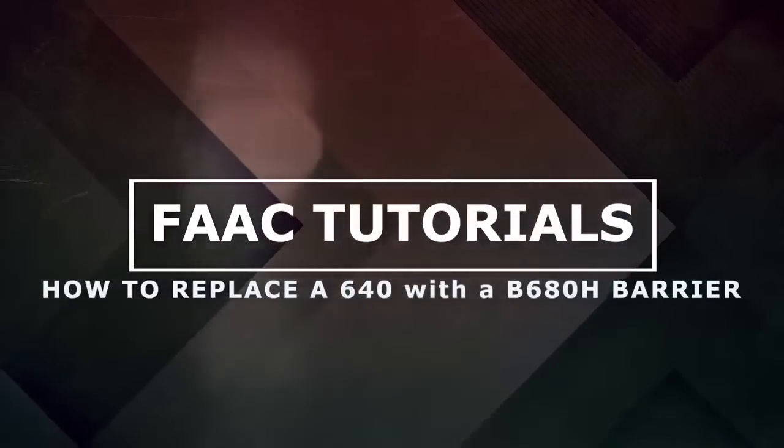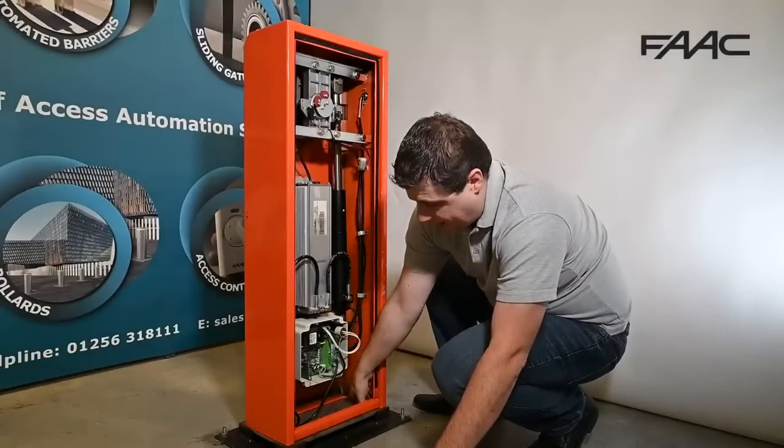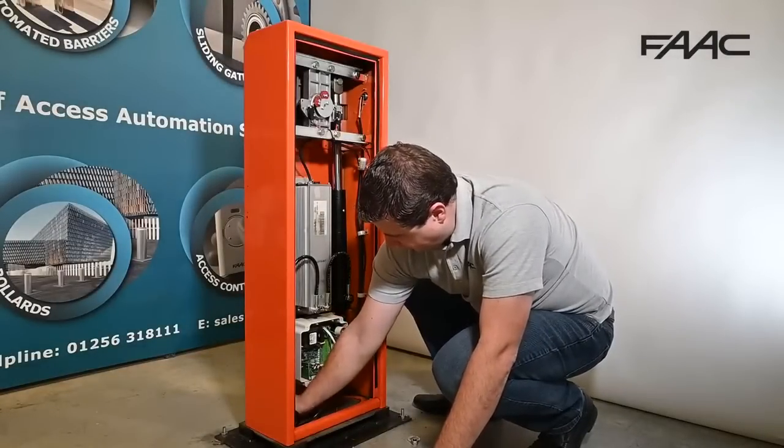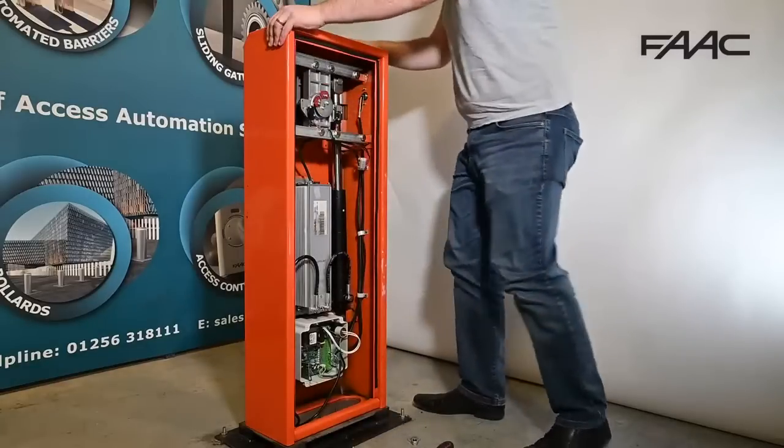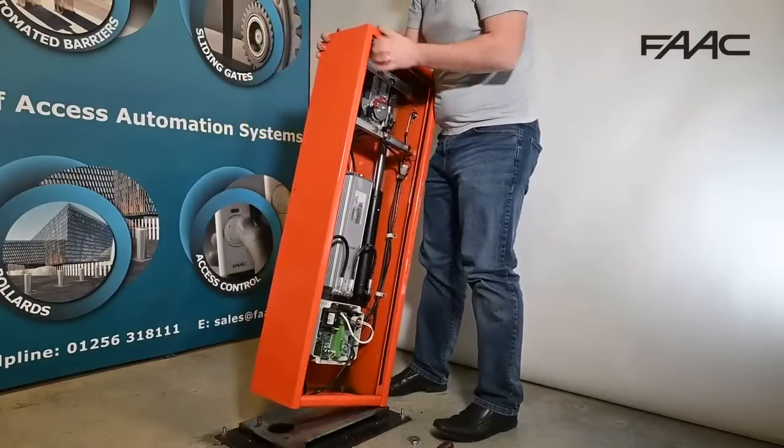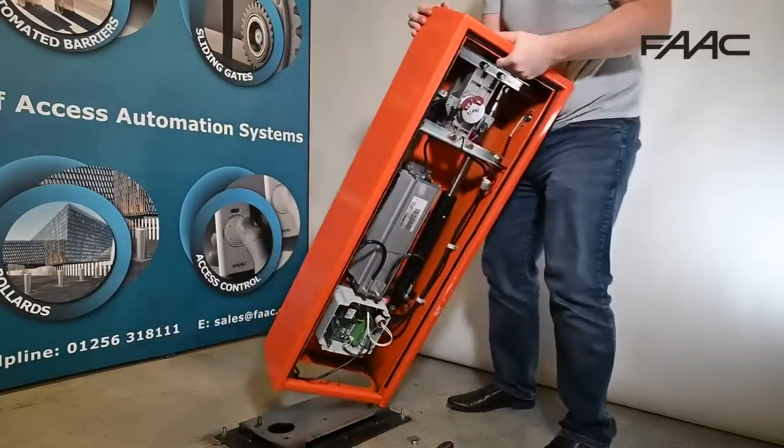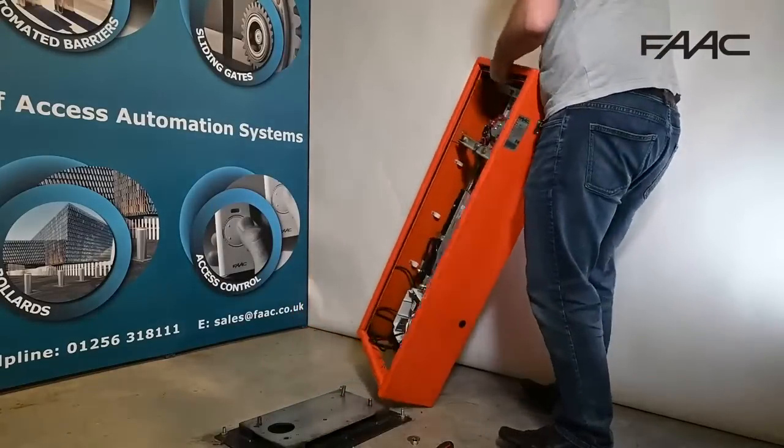So first start by removing the four securing nuts to hold the 640 down. Once you've got those off, you can remove the 640 barrier off its base plate, taking care not to catch or damage the cables coming through the foundation plate.